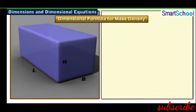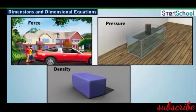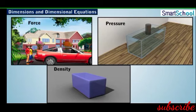Similarly, the dimensional formula for mass density, which is the ratio of mass to volume, is ML⁻³. So far, we have discussed derived physical quantities — namely force, pressure, and density — which have units: Newton, Pascal, and kilogram per meter cubed, respectively.